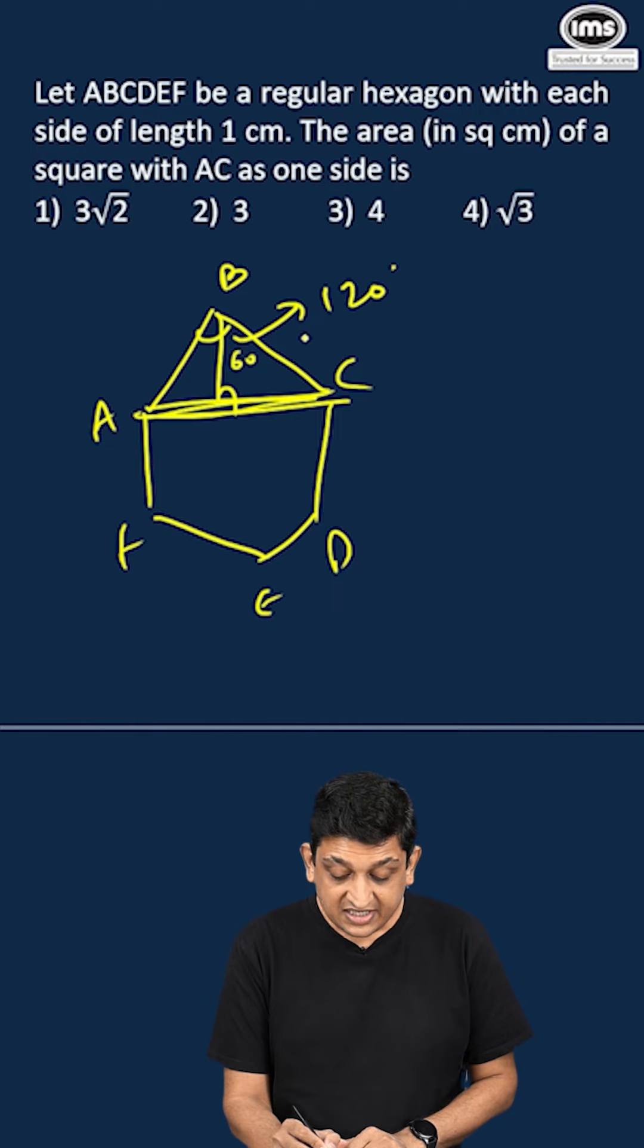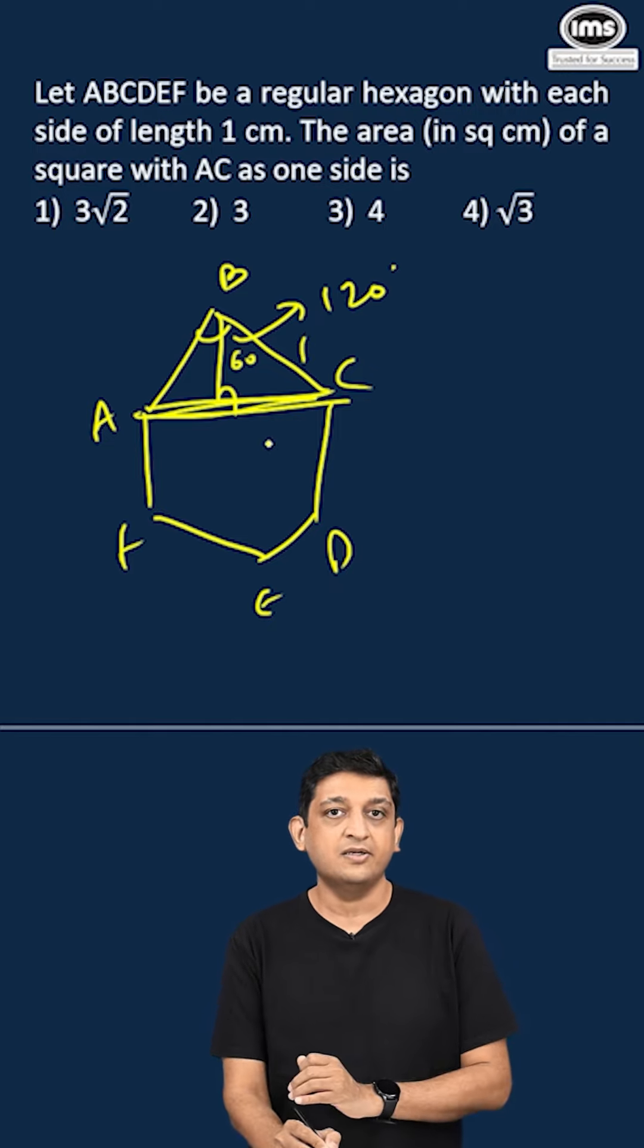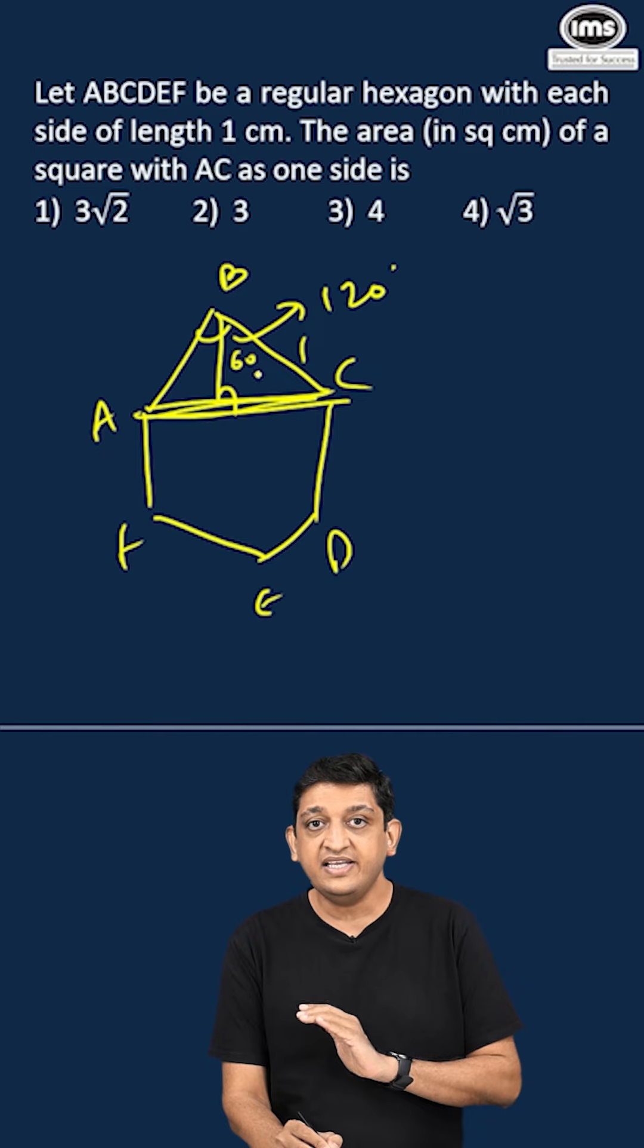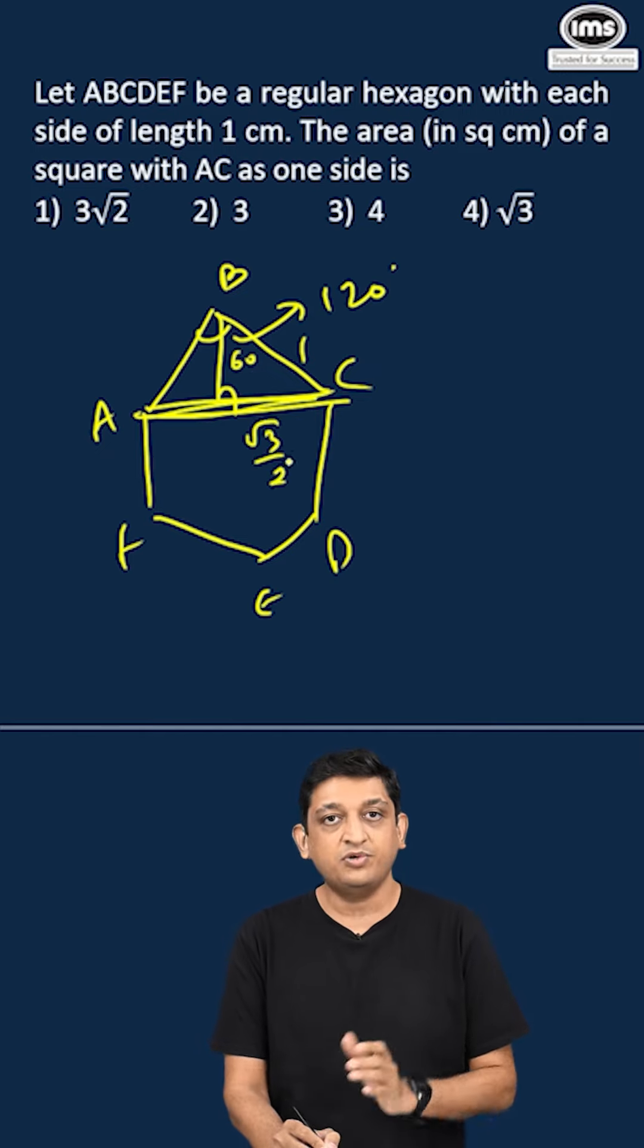The side of the hexagon is 1. This becomes a 30-60-90 triangle. The side opposite to 60 degrees is √3/2 times that of the hypotenuse. So √3/2 into 1 is √3/2.